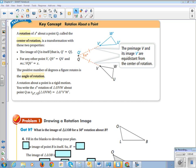So you're not changing dimensions or anything else. And then for every other point V, QV prime is equal to QV, and the measure of the angle is equal to the original angle.